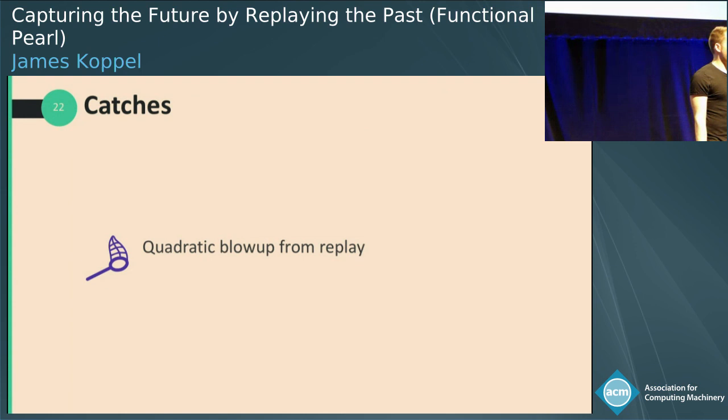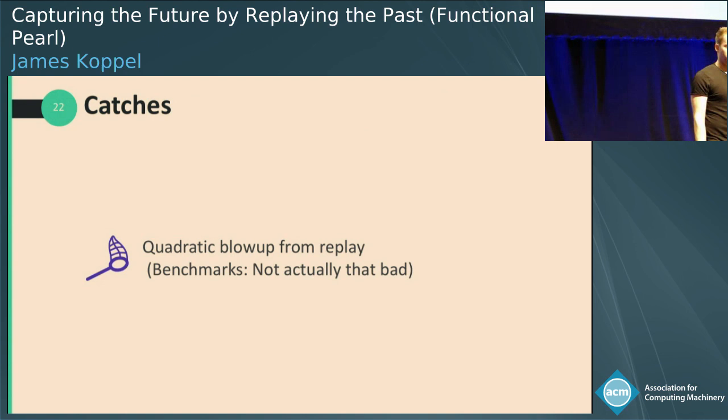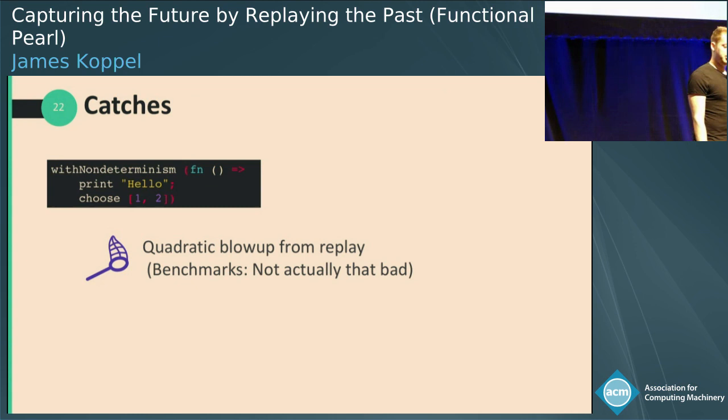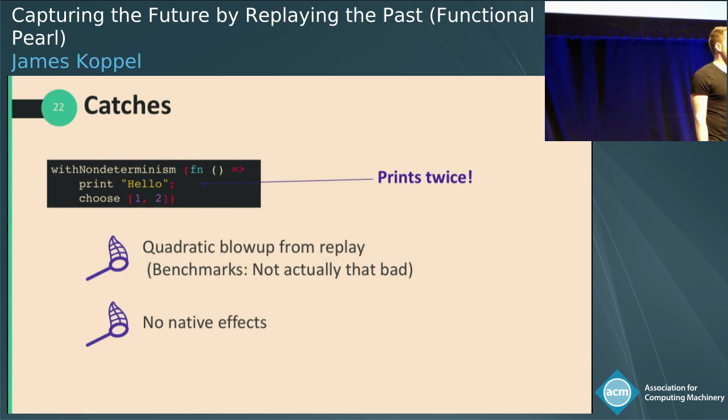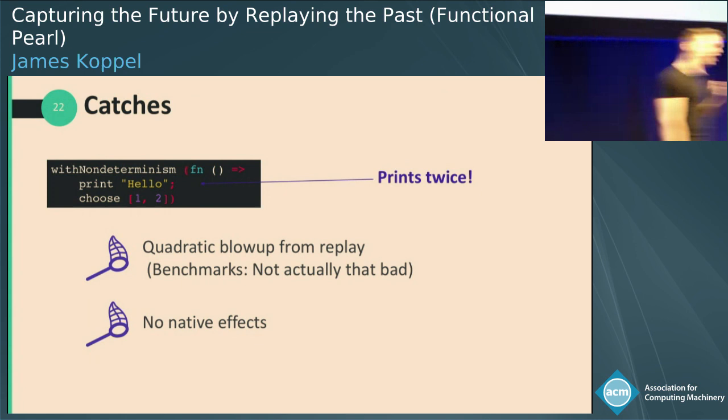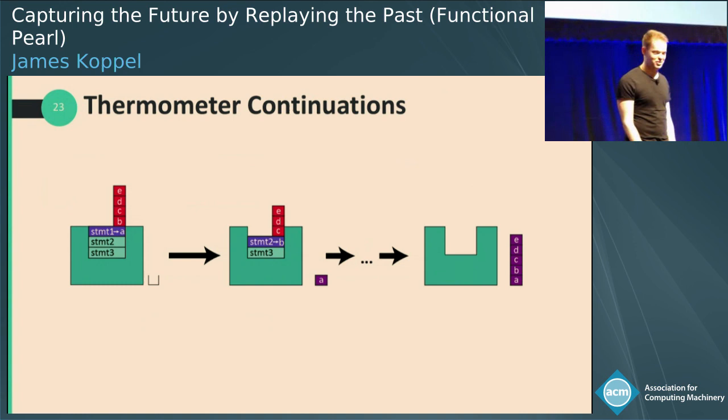So there are a couple of catches you might have noticed. One is that we replay your function, and this can blow up quadratically in the number of choices. We'll show some benchmarks later that this is actually still runnable. But there's another thing: suppose you wanted to do an effect before a choice, like print something — this would now run twice in each replay. So you cannot use any effects native to the language. But who needs native effects? I'm about to show you how to get simulated effects — any effects you want.